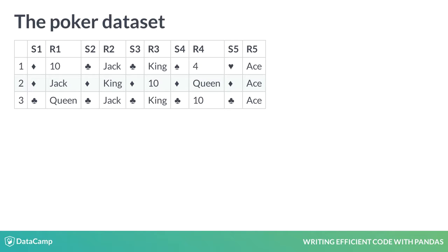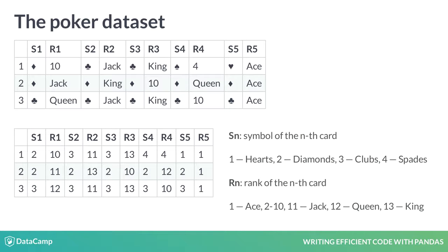Let's look at the main data set we will use in this lesson, which derives from the famous poker card game. In each round, each player has five cards in hand, each one characterized by its symbol — which can be either hearts, diamonds, clubs or spades — and its rank, which ranges from 1 to 13. The data set consists of every possible combination of five cards one person can possess.